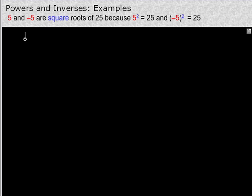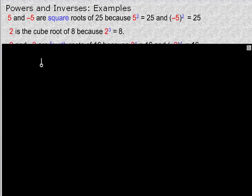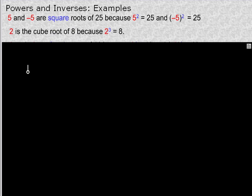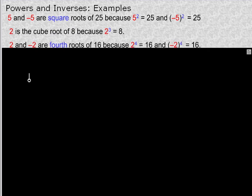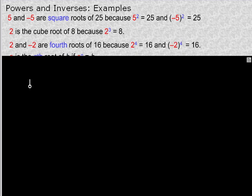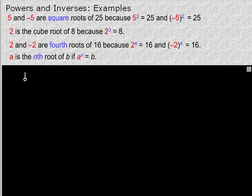Powers and inverses. So 5 and negative 5 are square roots of 25 because 5 squared is equal to 25 and negative 5 squared is equal to 25. 2 is the cube root of 8 because 2 cubed is 8. 2 and negative 2 are the fourth roots of 16 because both of those to the fourth power are equal to positive 16. So a is the nth root of b if a to the n is equal to b.